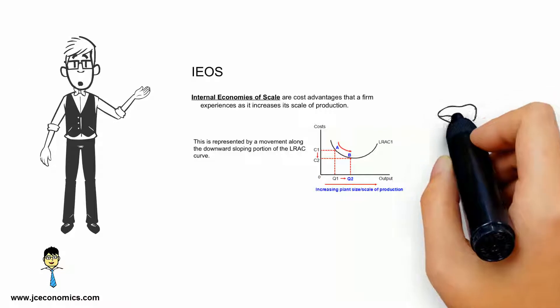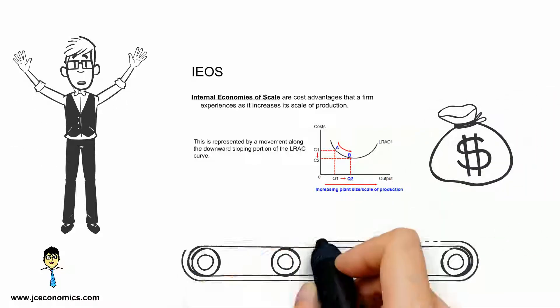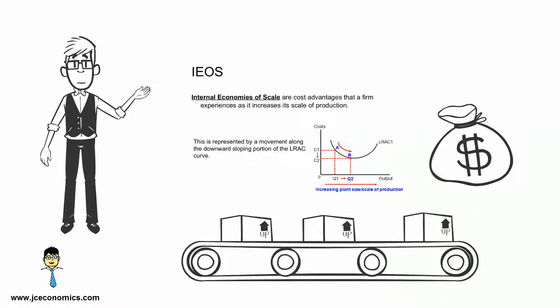Diseconomies of scale on the other hand is defined as the increase in unit cost of production experienced by a firm or industry when it expands internally or externally.